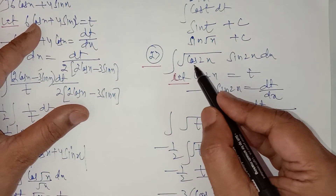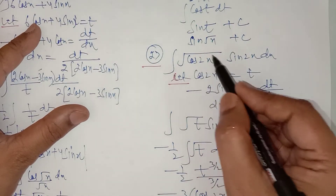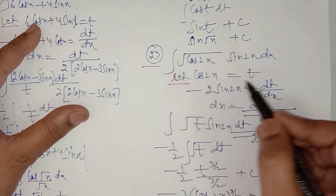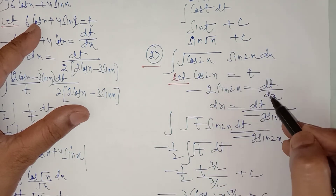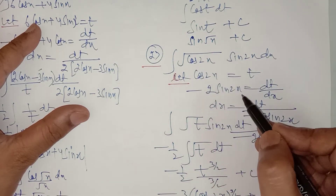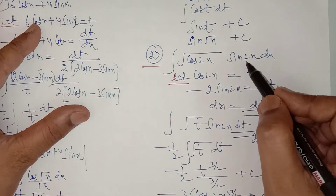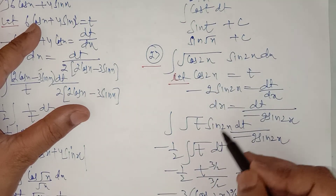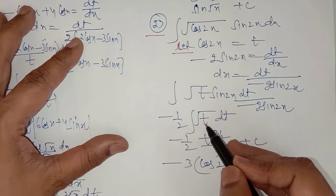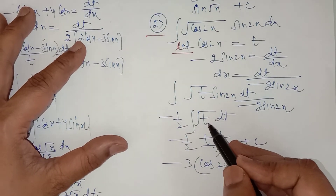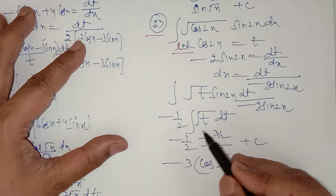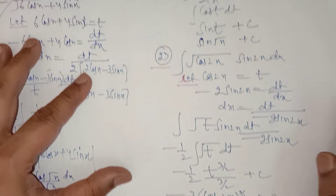In question number 27 you can let cos 2x equal to t, because its derivative is sine 2x. So let cos 2x equal to t; dt upon dx equals minus 2 sine 2x. Replace the value of dx; sine 2x cancels out with sine 2x. You have to integrate only root t, which is t to the power half plus 1 upon (half plus 1). Replace the value of t which is cos 2x.